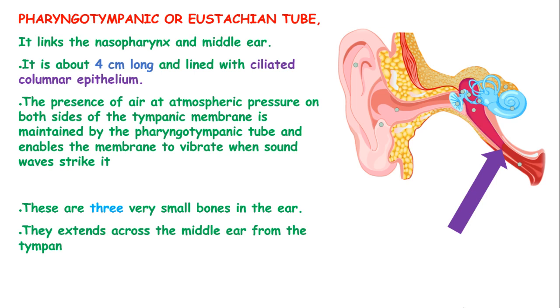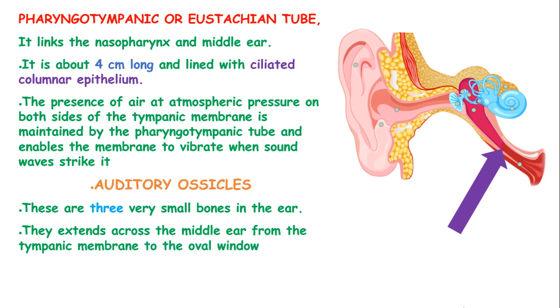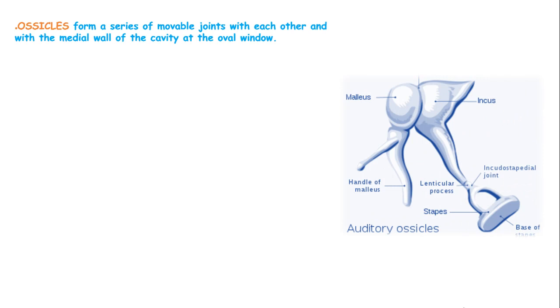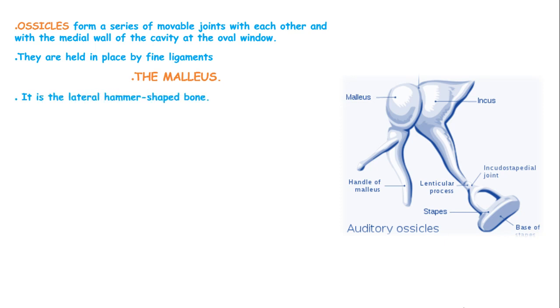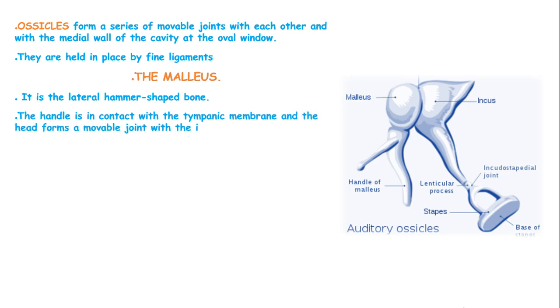There are three very small bones in the ear known as the ossicles, and they extend across the middle ear from the tympanic membrane to the oval window. These ossicles form a series of movable joints with each other and with the medial wall of the cavity at the oval window. They are held in place by fine ligaments. The malleus is a lateral hammer-shaped bone whose handle is in contact with the tympanic membrane, and whose head forms a movable joint with the incus.